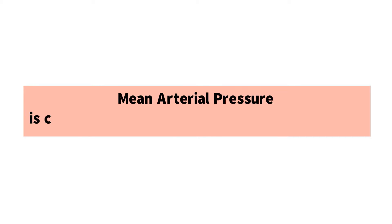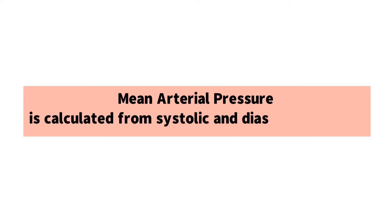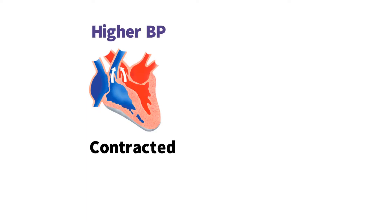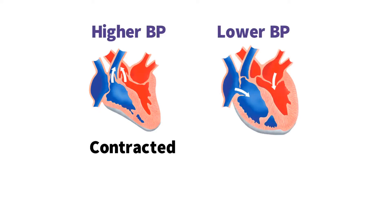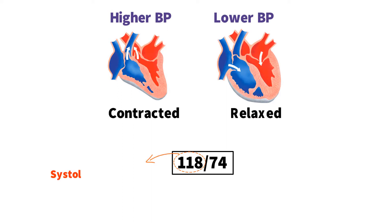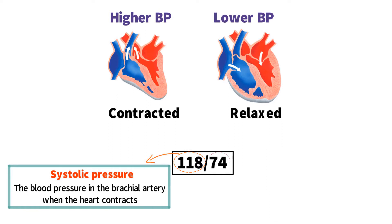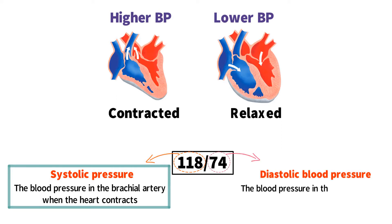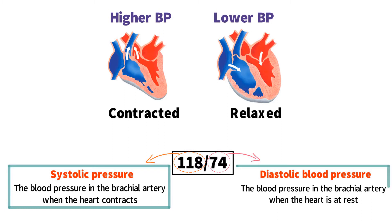Number 2: mean arterial pressure is calculated from systolic and diastolic pressure. Blood pressure is higher in the aorta when the heart contracts compared to when the heart is at rest. This is why a blood pressure reading has two numbers, such as 118 over 74. 118 is the systolic pressure — the blood pressure in the brachial artery when the heart contracts — and 74 is the diastolic blood pressure, meaning the blood pressure in the brachial artery when the heart is at rest.